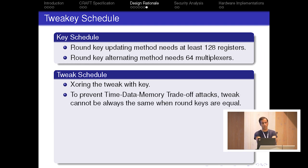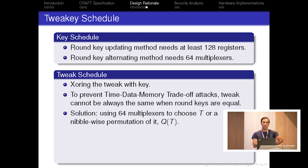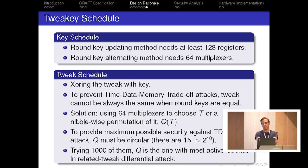If we use only the first two tweakeys, that would cause time-data-memory trade-off attacks in the related-key model. To prevent this, we need to use a Q permutation to change the tweak in rounds that have the same round keys. To provide maximum possible security against time-data-memory trade-off attacks, this Q permutation must be a circular one. There are around 2^40 such permutations, but checking the security of all 2^40 permutations is not possible.